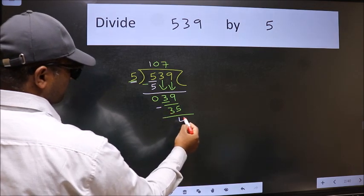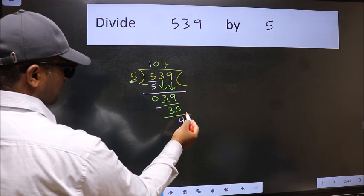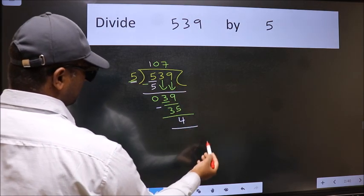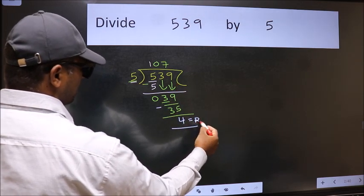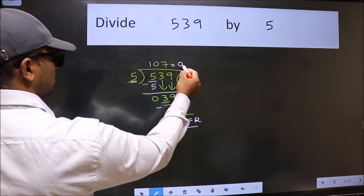Now we should subtract. We get 4. No more numbers to bring it down, so we stop here. This is our remainder and this is our quotient.